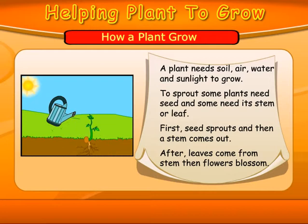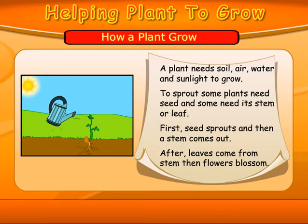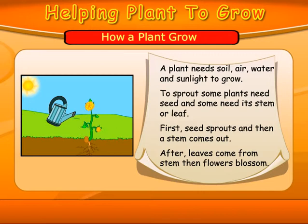How a plant grows. A plant needs soil, air, water and sunlight to grow. To sprout, some plants need a seed and some need a stem or leaf.